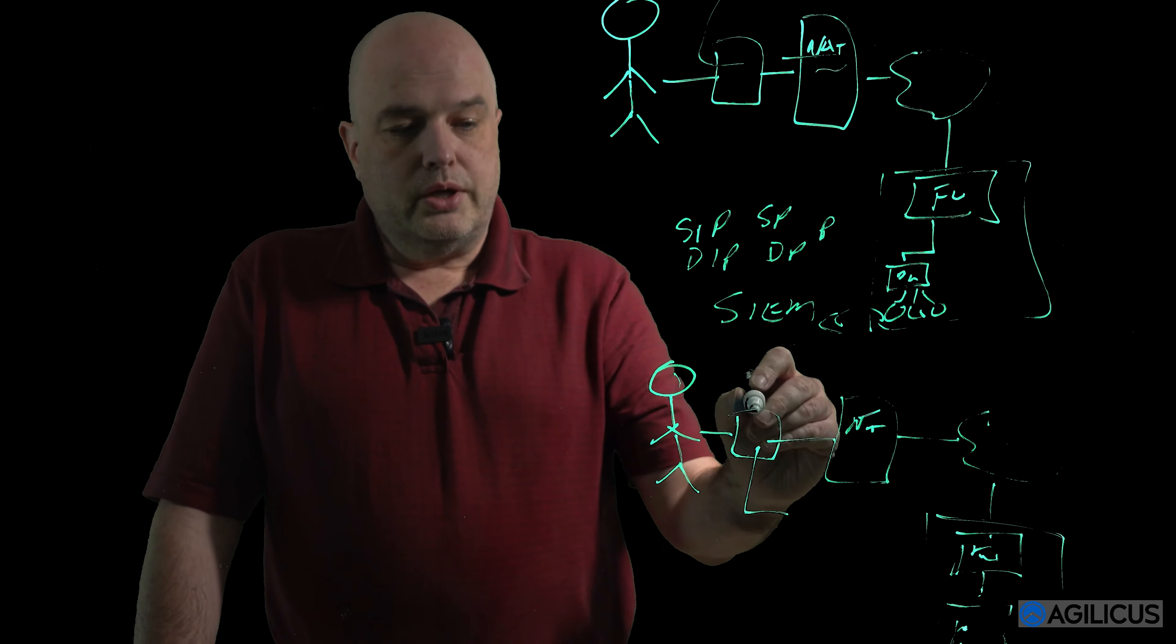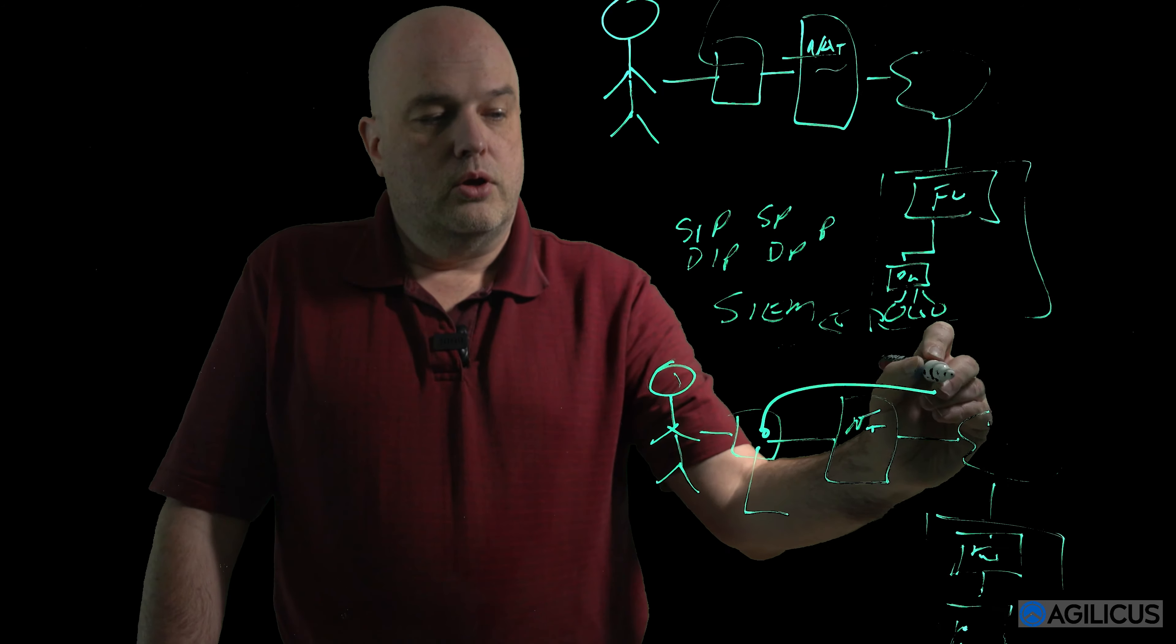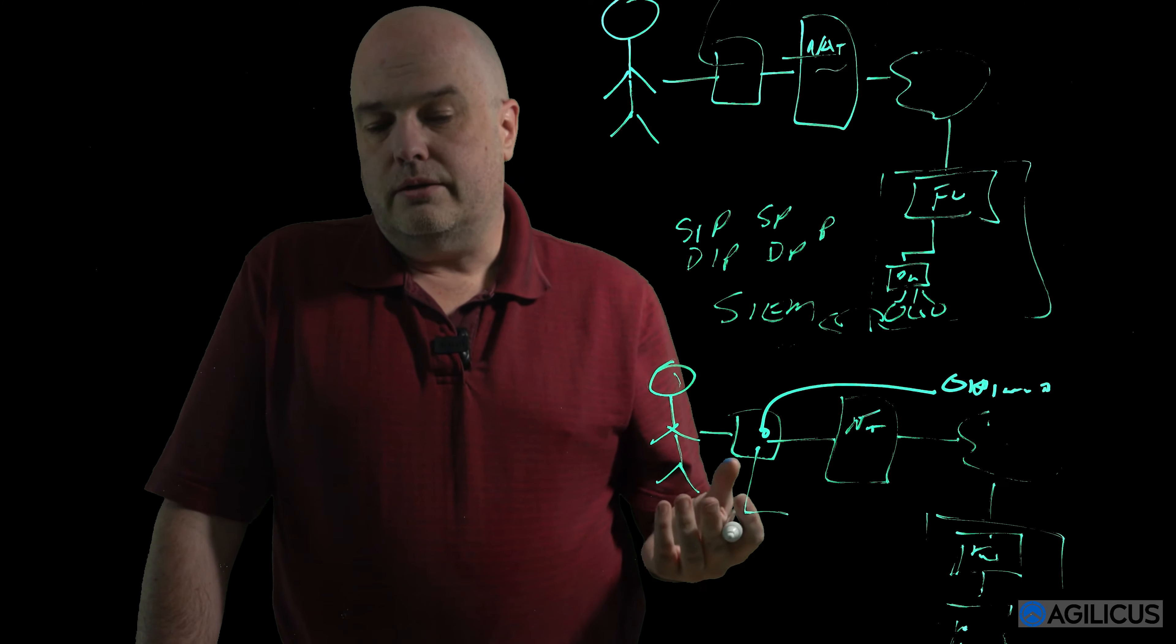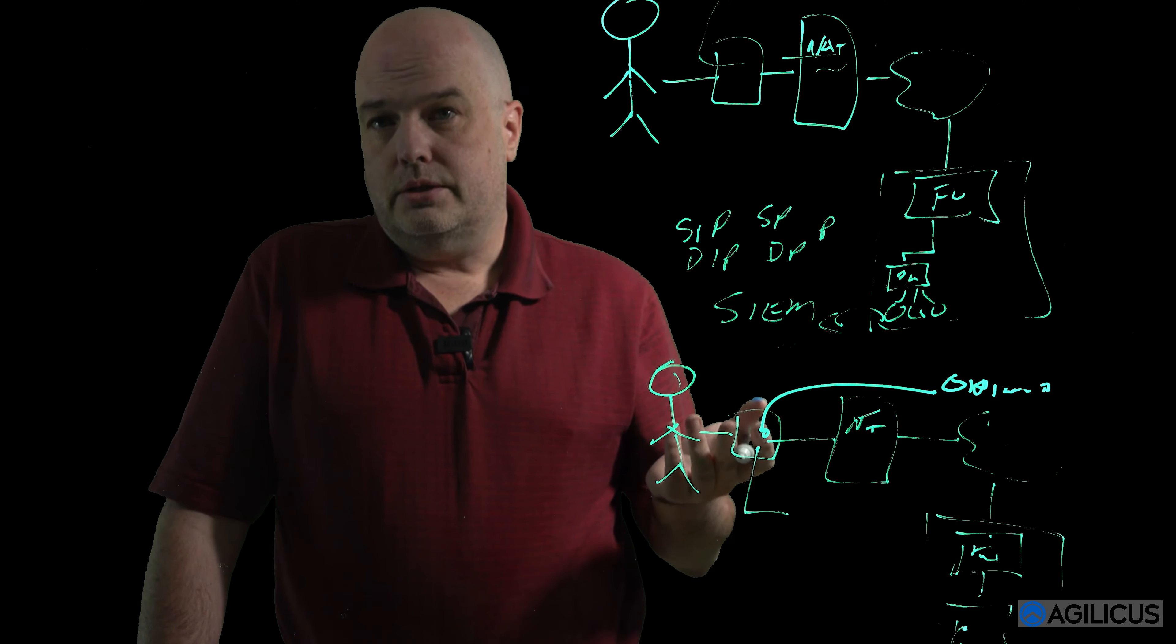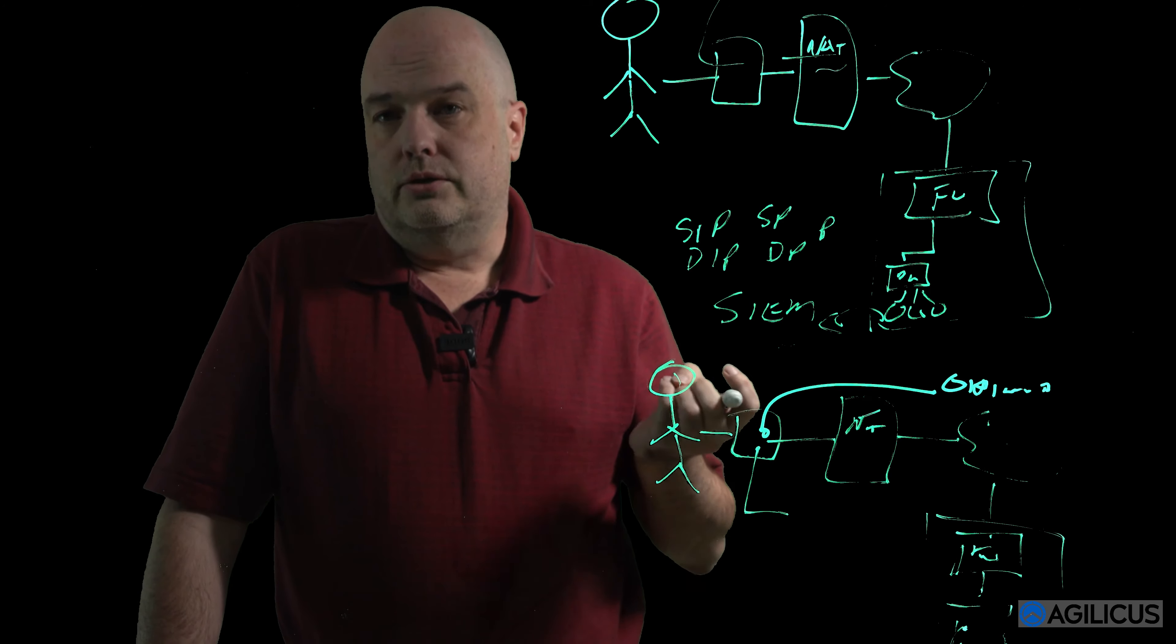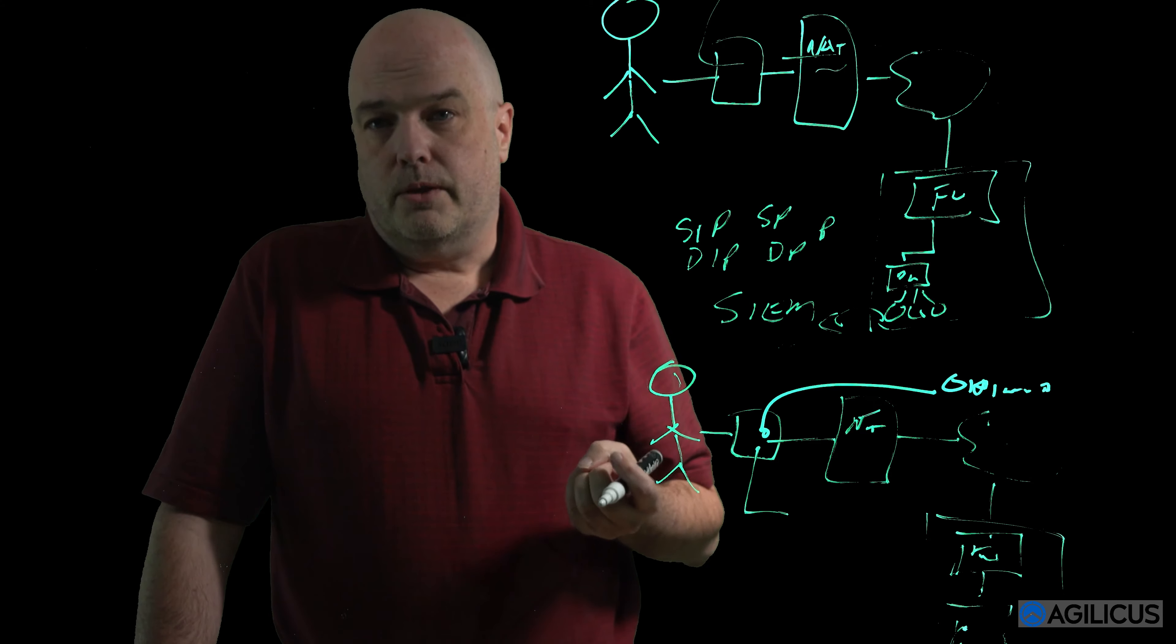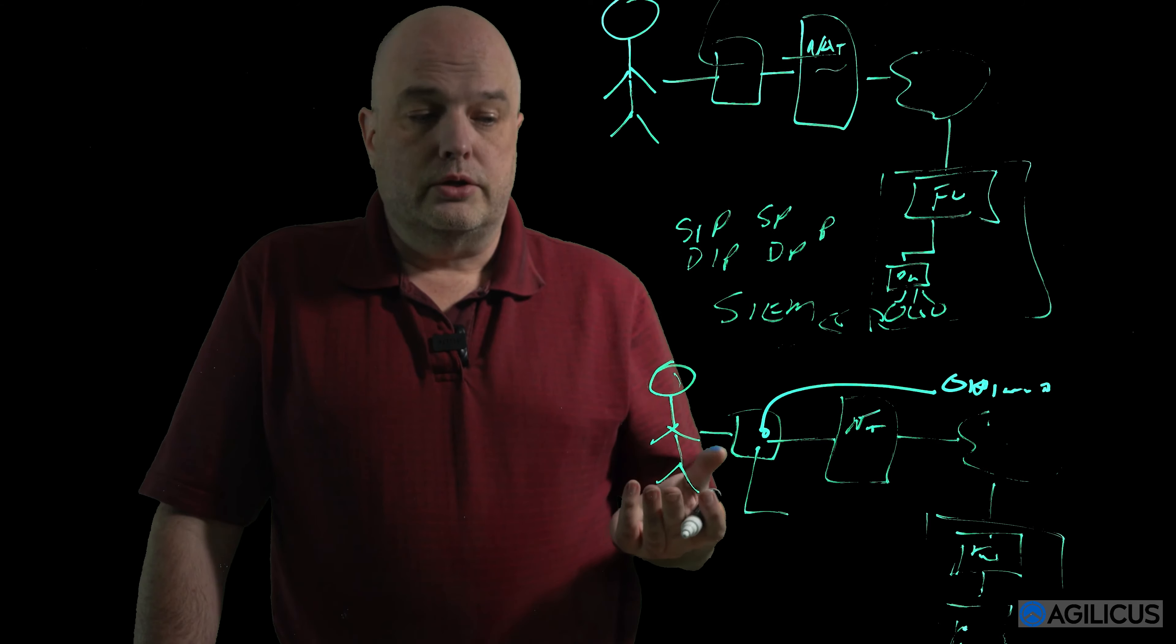But what we're doing is the browser is participating in a login flow called OpenID Connect. And that causes it to get something called an access token. An access token is called a JWT. And inside it, it cryptographically references who the user is, when it was assigned, when it's good to, and what you're allowed to do.